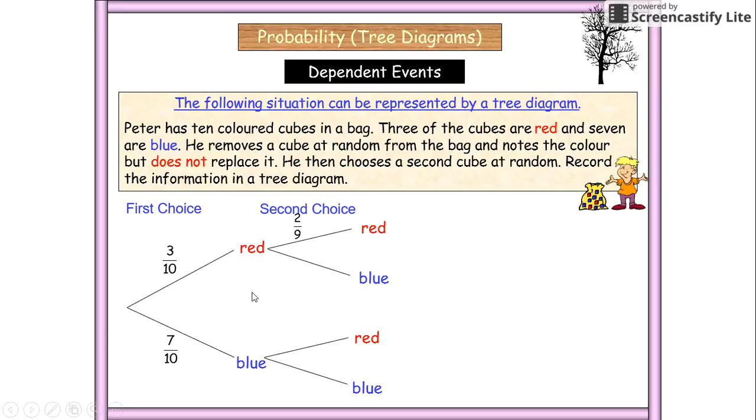Okay, so now we're going to reduce our numerator by one, which becomes two. And we're going to reduce our denominator by one, which becomes nine.